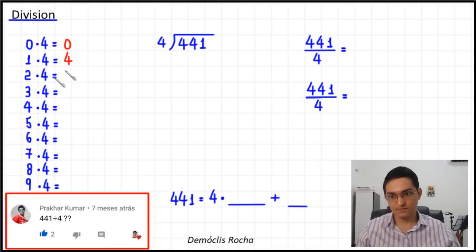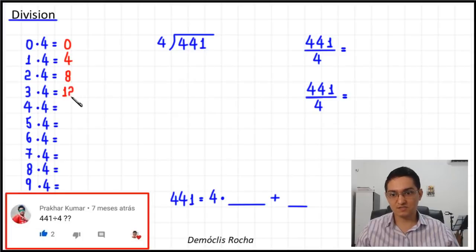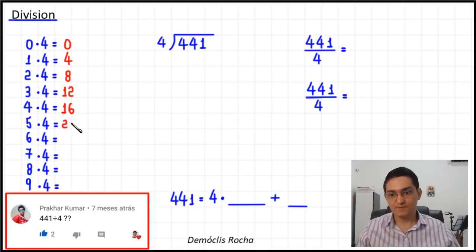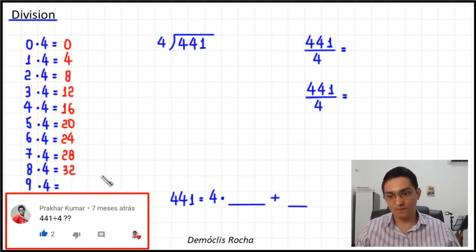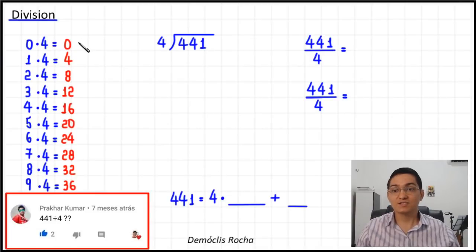Two times four is four plus four, which is eight. Three times four equals 12, because that is four more than eight. Adding four again, we find 16 — the result of four times four. Five times four equals 20, and adding four more we find 24, which is six times four. Adding four again gives 28, which is seven times four. Adding four one more time gives 32, which is eight times four. Finally, adding four we find 36, the result of nine times four.